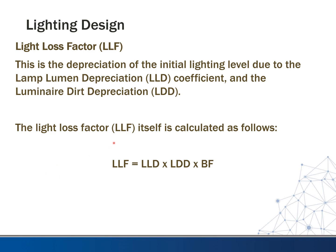Light loss factor is where we put all this together — it is the depreciation of the initial lighting level due to the lamp lumen depreciation coefficient and the luminaire dirt depreciation. Light loss factor is calculated by multiplying LLD, LDD, and the ballast factor together. When using the Visual lighting design program, you have to manually set this value — it defaults to one, which is not very realistic. If you use the Lithonia Visual lighting program or other lighting programs, remember to account for this light loss factor.